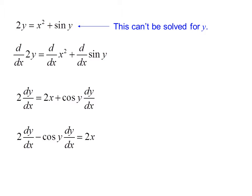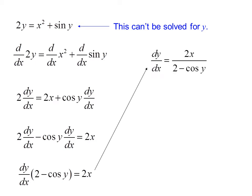So we move all of the dy/dx terms to the left side, and factor out dy/dx as a common factor. Then it's a simple matter to divide both sides by 2 minus cosine y to solve for dy/dx. Here once again we have an expression for the derivative in terms of x and y.